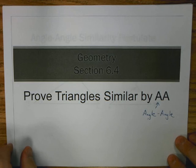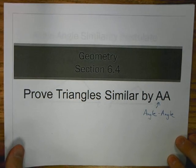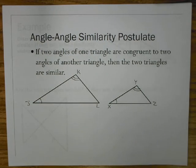This is our first method in showing similarity. We'll actually have two others in the next section, but this one is angle-angle. The similarity postulate reads: if two angles of one triangle are congruent to two angles of another triangle, then the two triangles are similar.